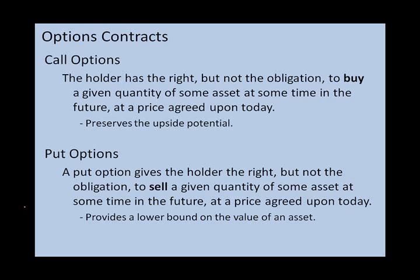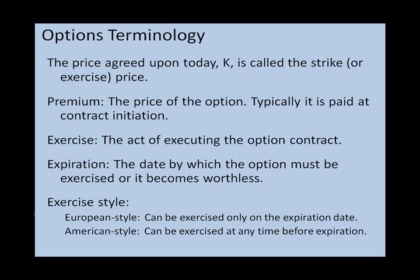With a call option it's the right but not the obligation to buy the asset in the future. With a put option it gives the holder the right but not the obligation to sell a given quantity of some asset at some time in the future at a price agreed upon today — this provides a lower bound on the value of an asset. The price agreed upon today is normally referred to as K and it's called the strike price or the exercise price.